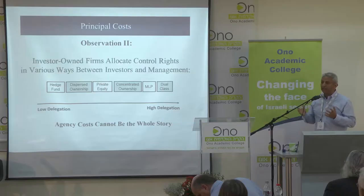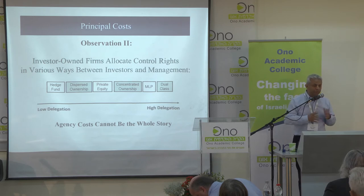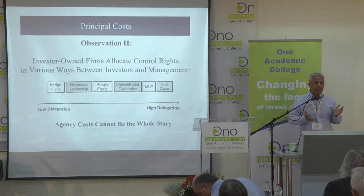On the other hand, when you look at the world, you do see that investor-owned firms allocate control in various ways between investors and management. On one hand, you have dual class, then master limited partnership, concentrated ownership, private equity, dispersed ownership, and hedge funds. Each has a different allocation of control rights. So agency costs cannot be the whole story, even though I wrote that 20 years ago.